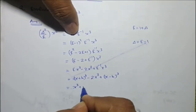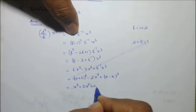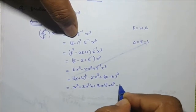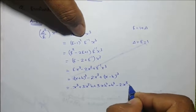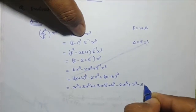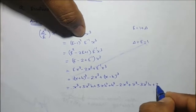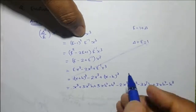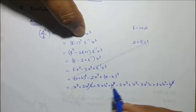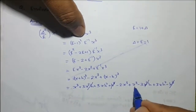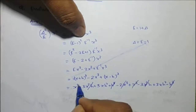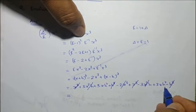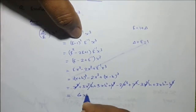Expanding: x cubed plus 3x squared h plus 3xh squared plus h cubed minus 2x cubed plus x cubed minus 3x squared h plus 3xh squared minus h cubed. The x cubed terms cancel, the x squared h terms cancel, and what remains is 3xh squared plus 3xh squared, giving 6xh squared.